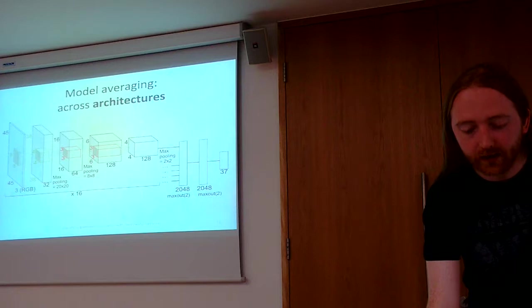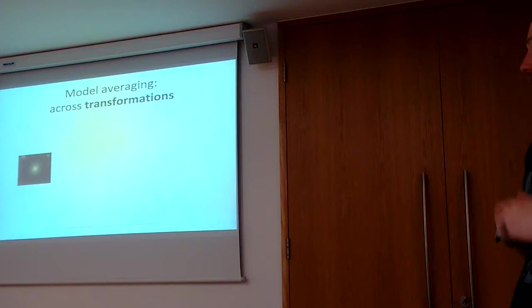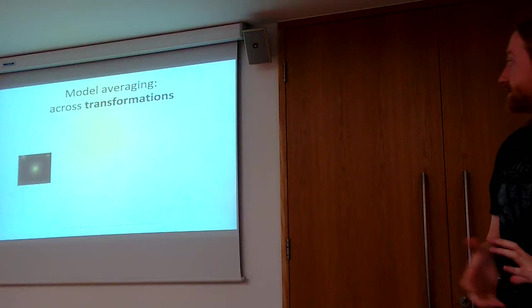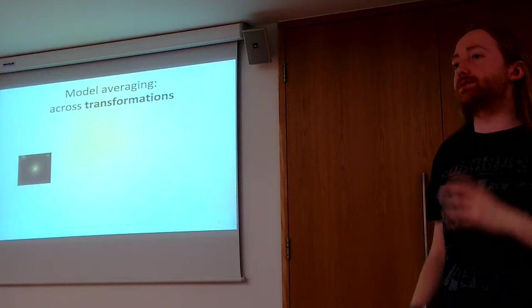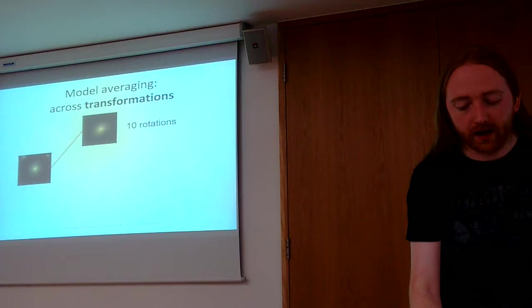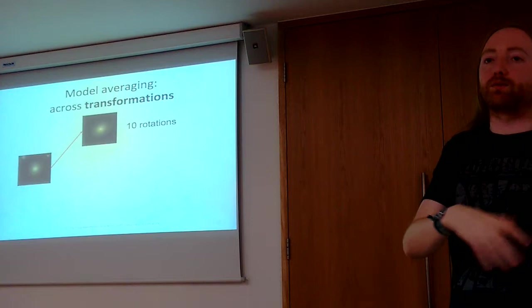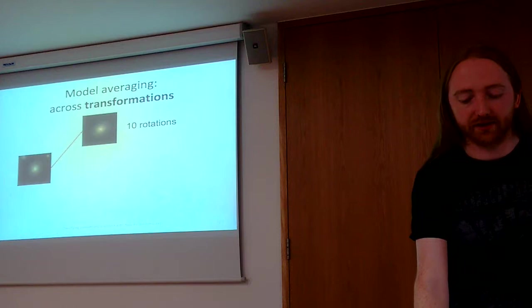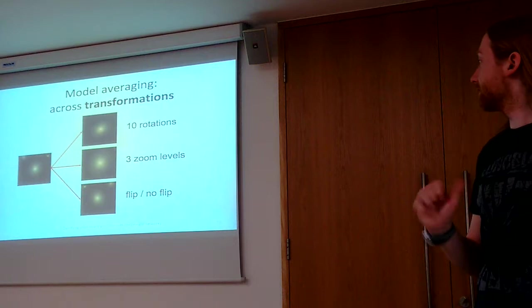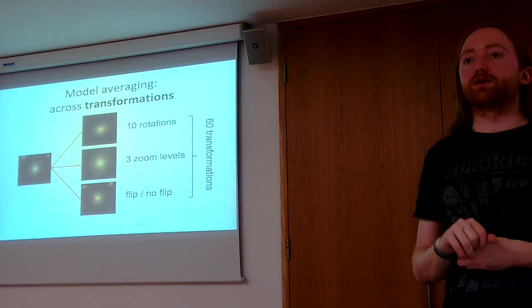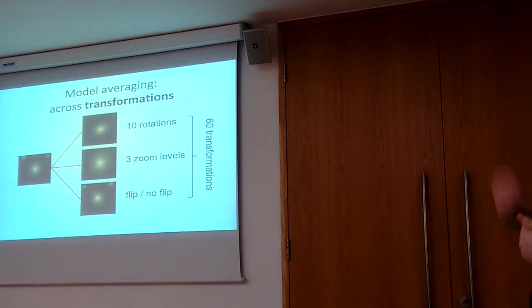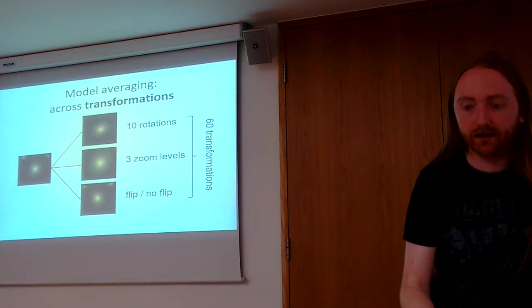Then another way to do averaging is across different transformations of the input. So I already showed that we made the network aware of the rotational invariance properties of these images, but we can also just feed it multiple rotated copies of the original image and generate predictions and then average them together. And I specifically did this with 10 rotations offset by 36 degrees each, so that none of these rotations would align with the 45 degree and 90 degree angles that the network already incorporates. So this is another layer of exploiting rotation invariance. And then we can also add a bunch of different zoom levels and we can either flip or not flip the images. And we get 60 different copies of the same image that we generate predictions for, and then we average them across these transformations. So we're averaging across 60 transformations times 17 different models in total. So that's lots of different opinions basically.